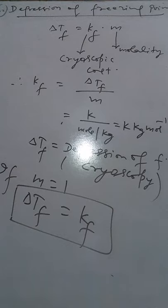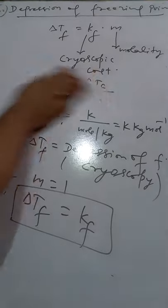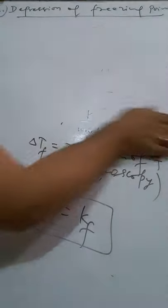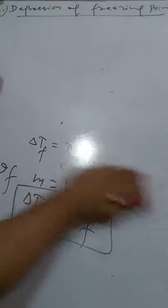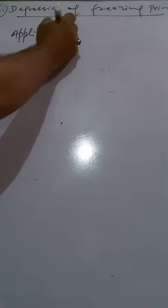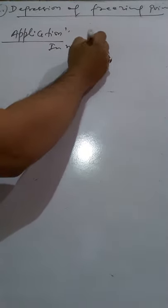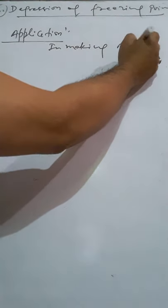When molality is unity, delta Tf is equal to KF from the above formula. Now we will study the application of freezing point depression. Do you know antifreeze? Ethylene glycol is an antifreeze. Let us study in detail the application of depression of freezing point — specifically its application in making antifreeze.